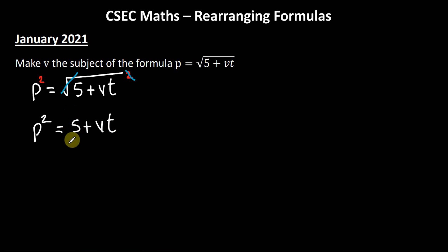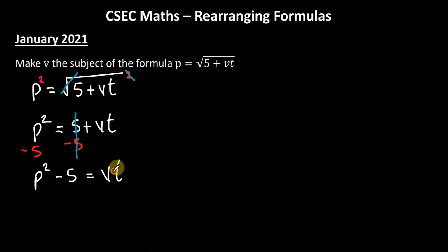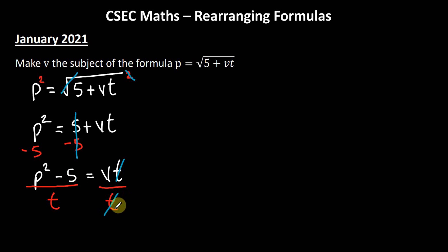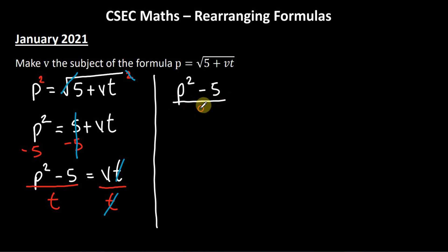Next, because we have a positive 5, I'll subtract 5 from both sides — 5 − 5 = 0 — leaving p² − 5 = vt. Now vt means v × t, and we want to make v the subject, so I need to get rid of t. Since we're multiplying by t, I'll divide both sides by t. T cancels t, and we're left with (p² − 5)/t = v. This is our solution — we have made v the subject.